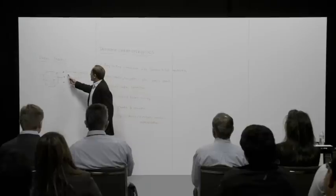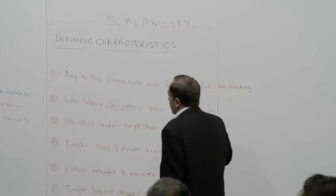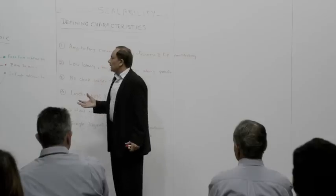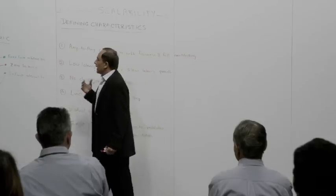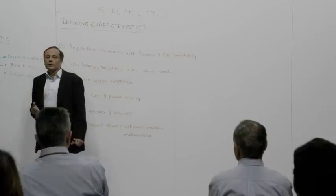The ideal fabric happens to be a fabric which has fixed finite interface bandwidth, it has zero interface to interface latency, and it has infinite internal bandwidth. It turns out that Q-fabric is very, very close to an ideal fabric.